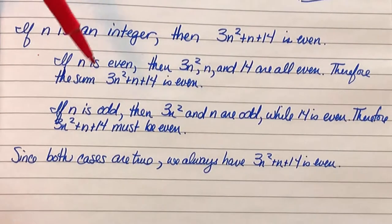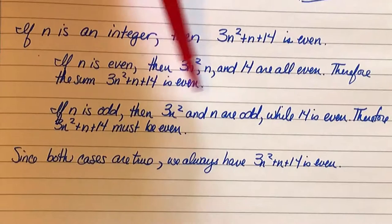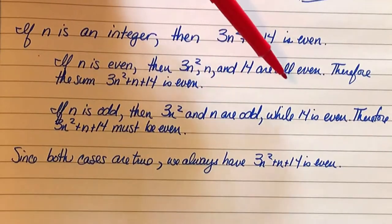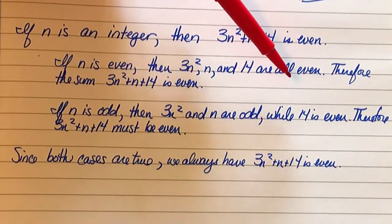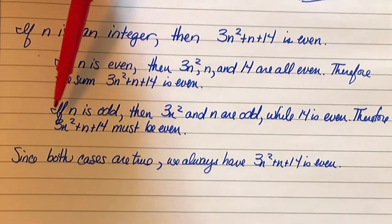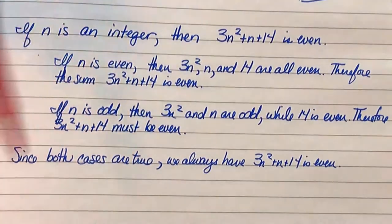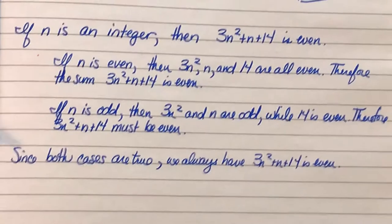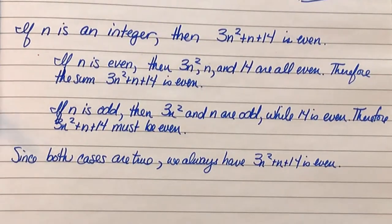If n is an odd integer, then two of the three things that you are adding are odd, and the third one is even. Odd plus odd plus even is even, and therefore the sum must also be even.